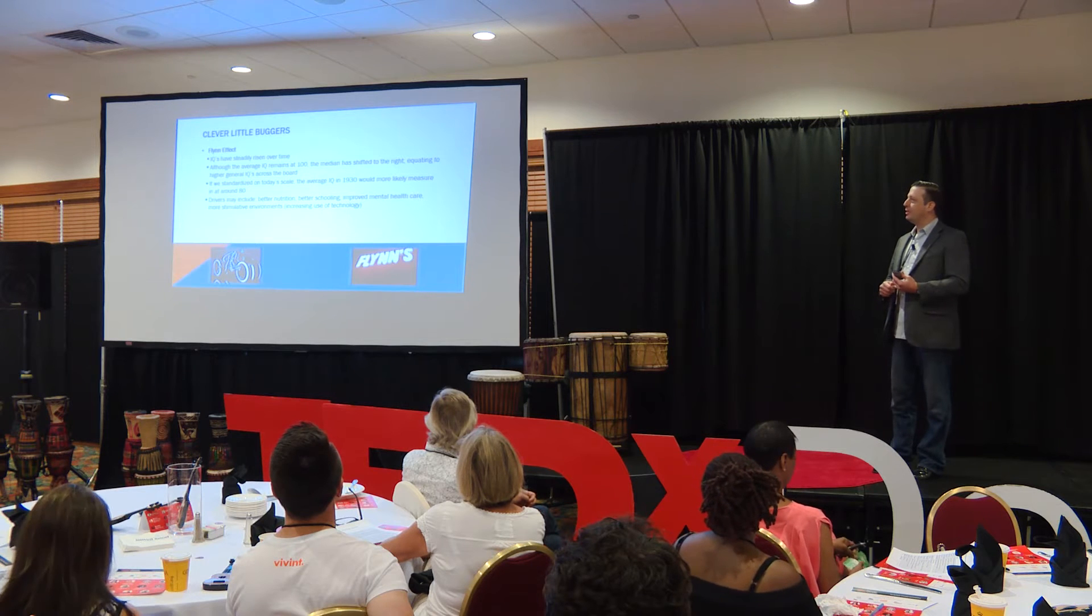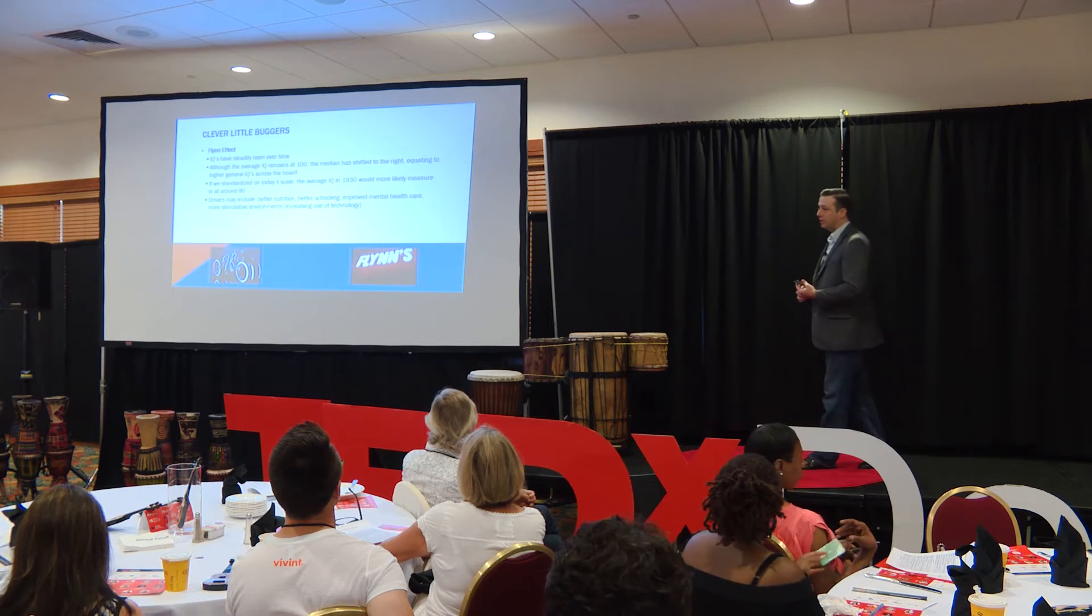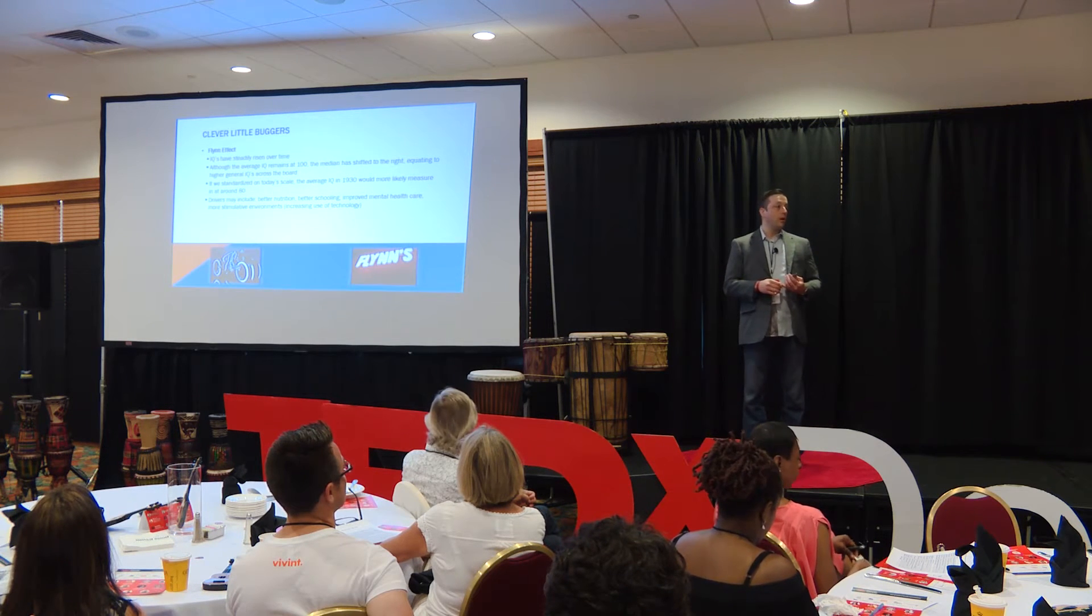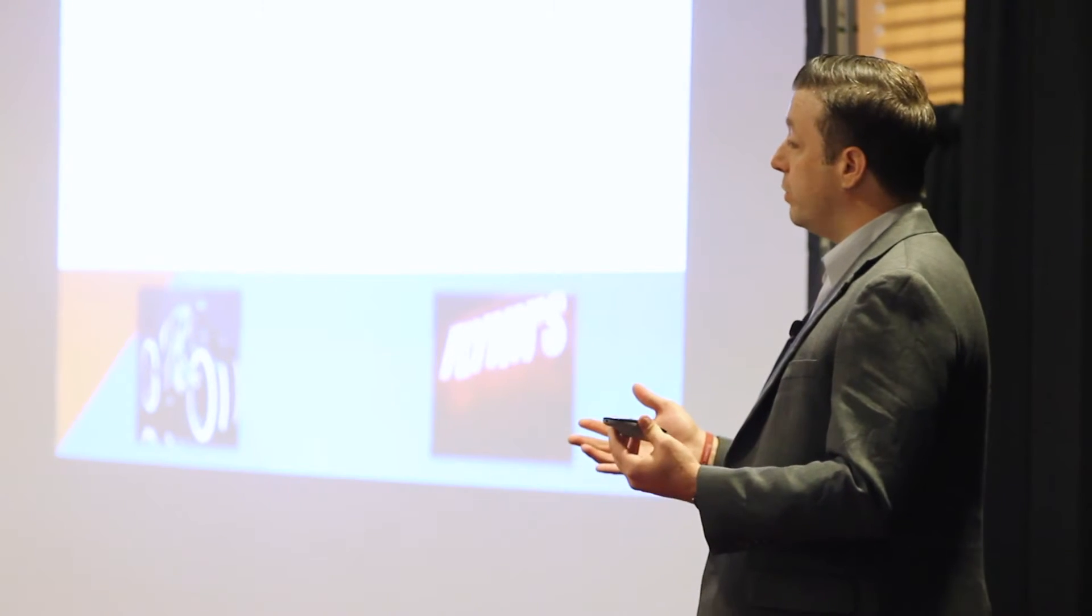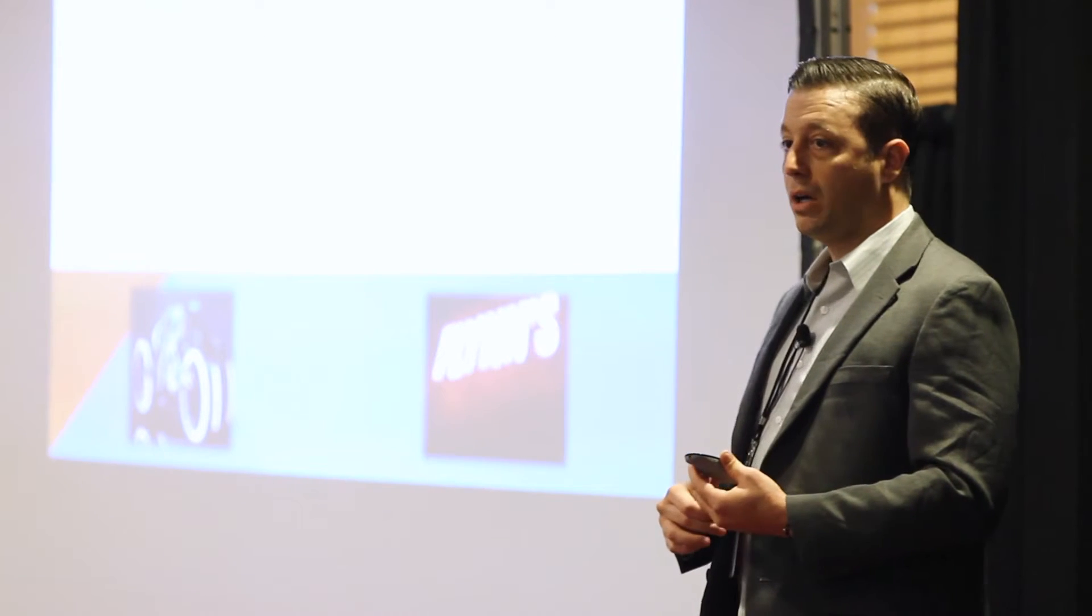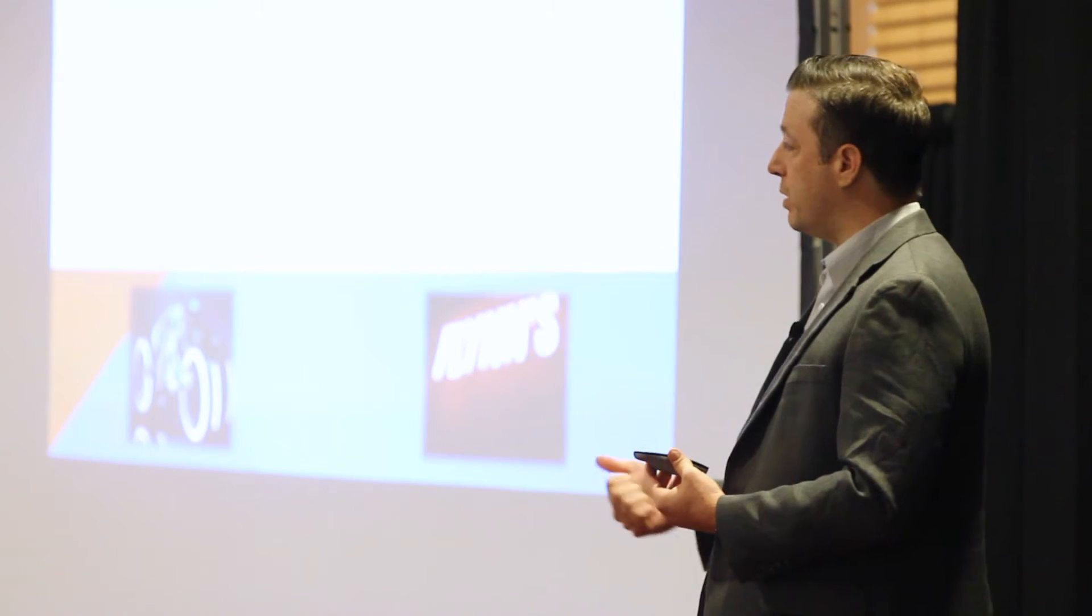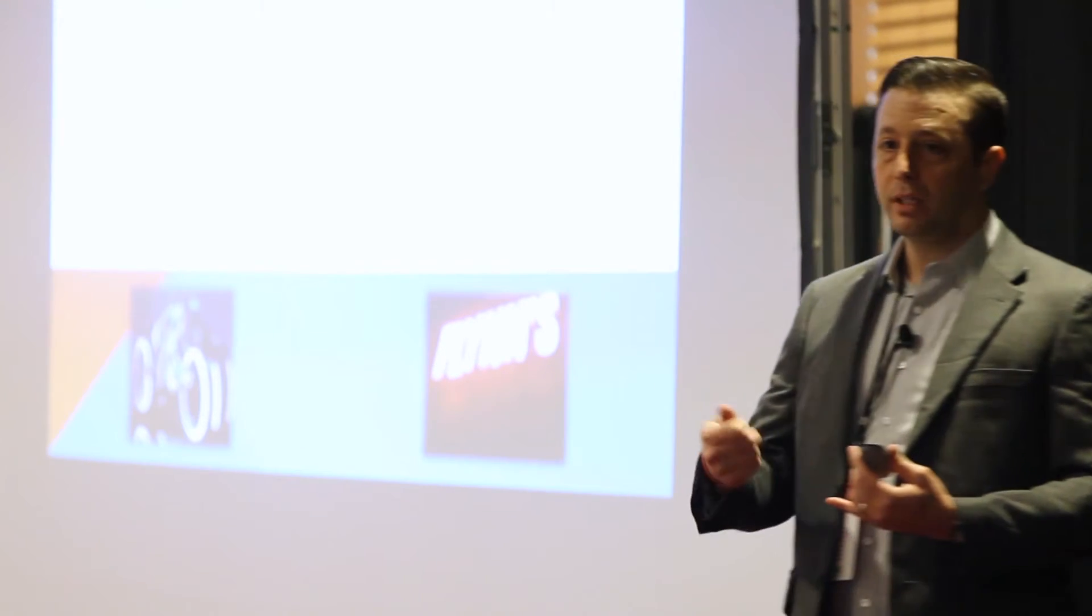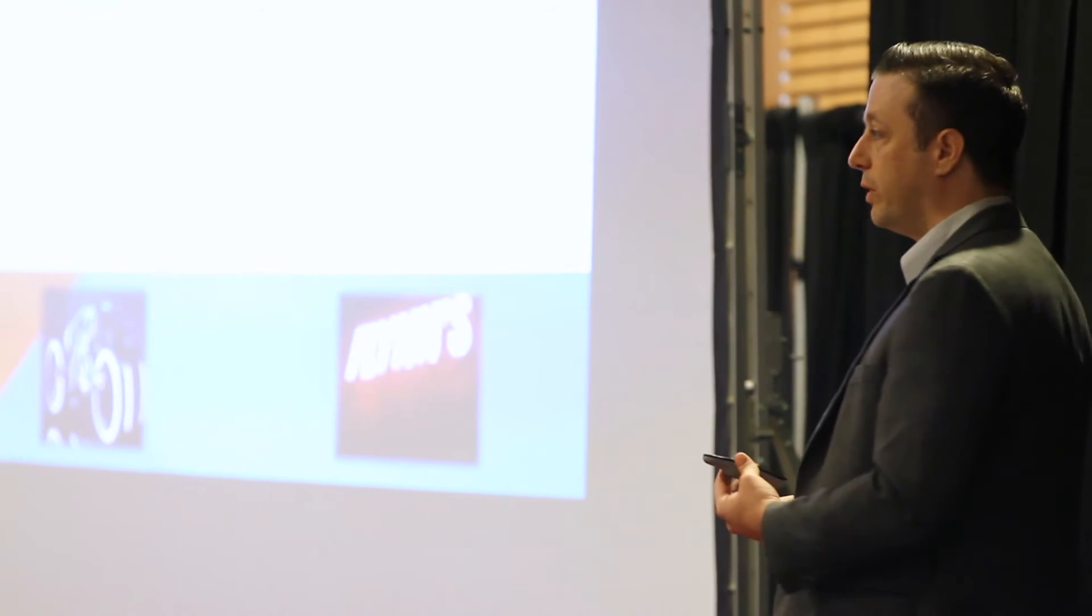One piece of evidence to support this idea that our minds evolved is a concept called the Flynn effect. If we were to go back into the 1930s and have someone take a modern IQ test, they would score about an 80. Today the average is 100. Over the past 70 to 80 years we've essentially become 20 to 30 percent more intelligent. Some of that's been driven by things like better nutrition, better access to education, more stimulation—we have more technology around us and our brains are being stimulated more frequently.